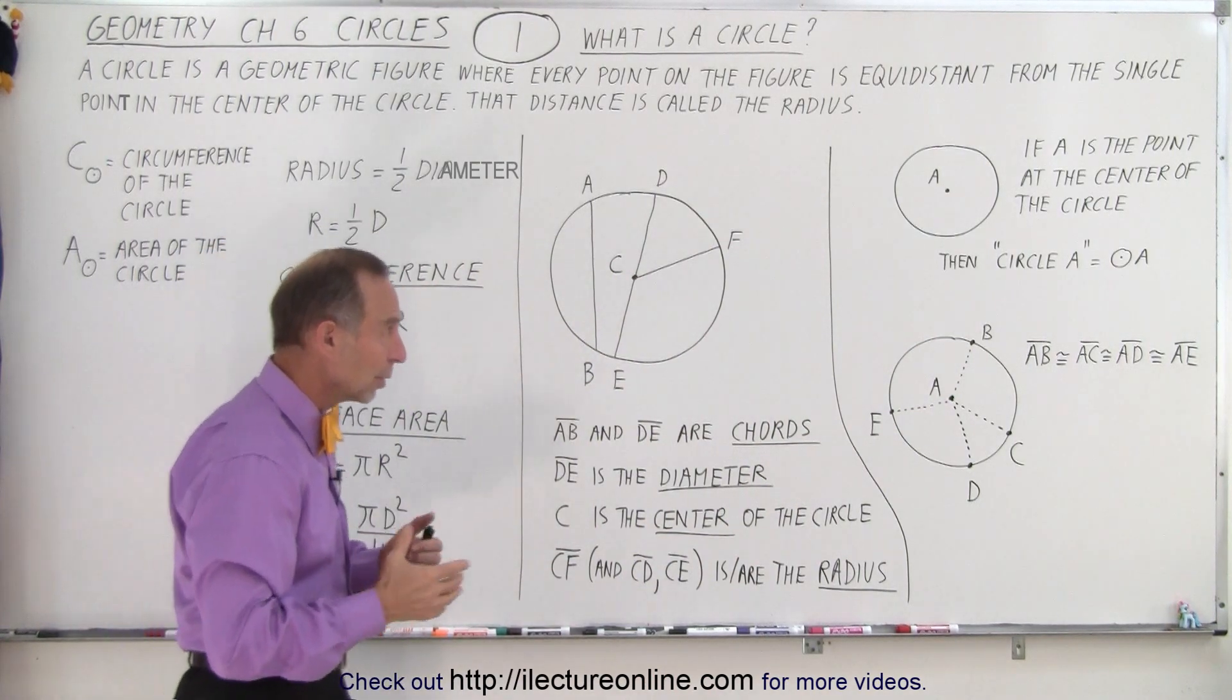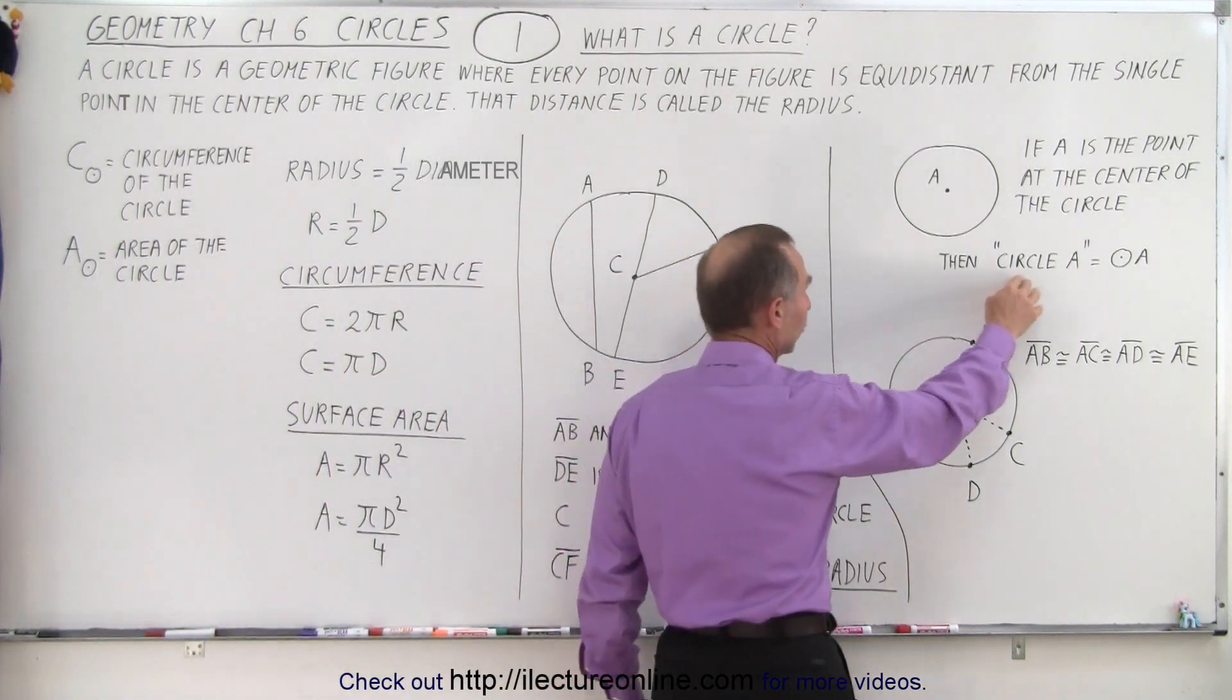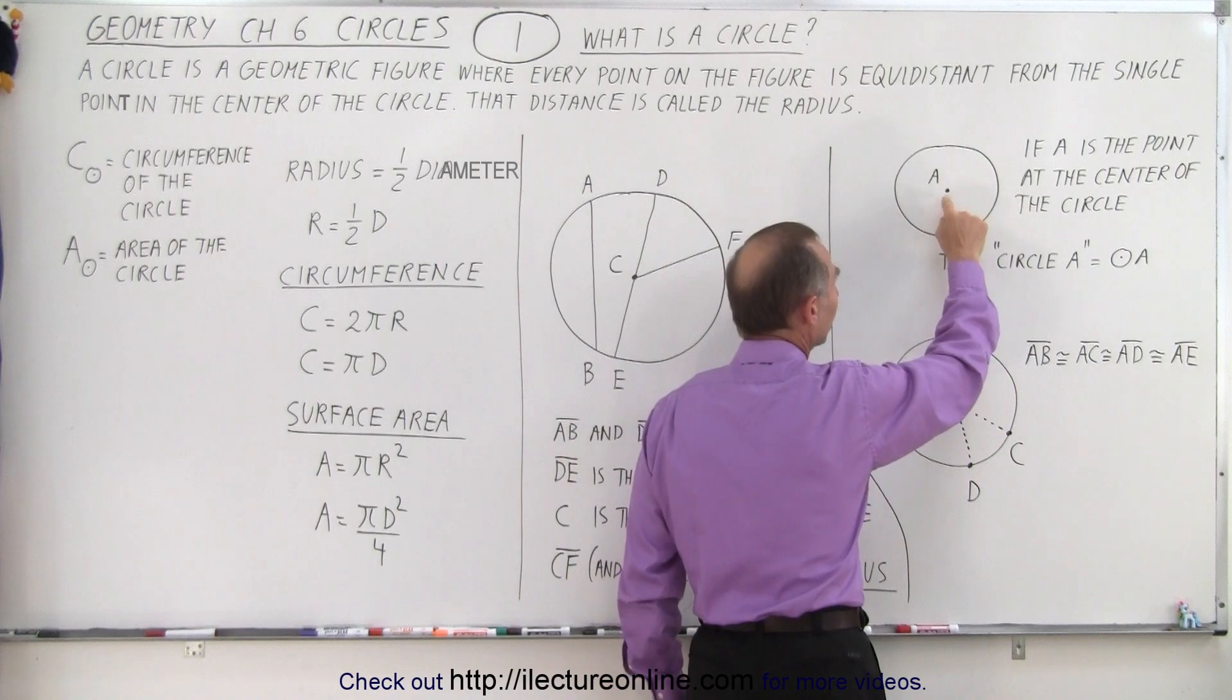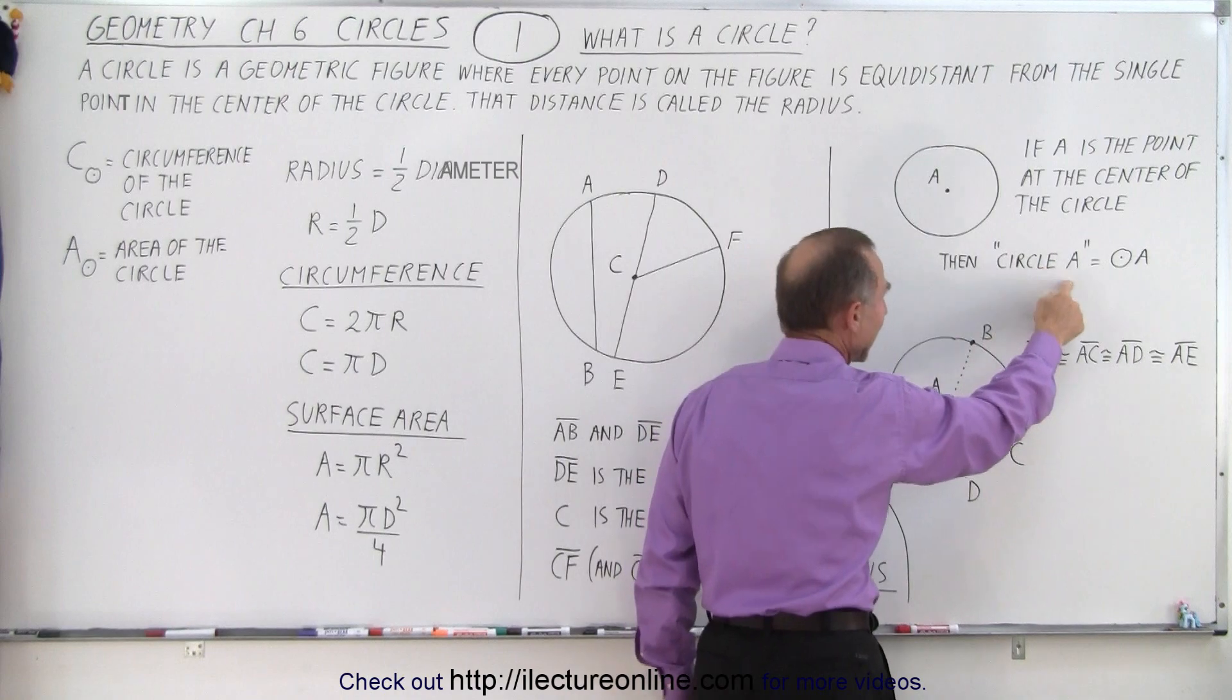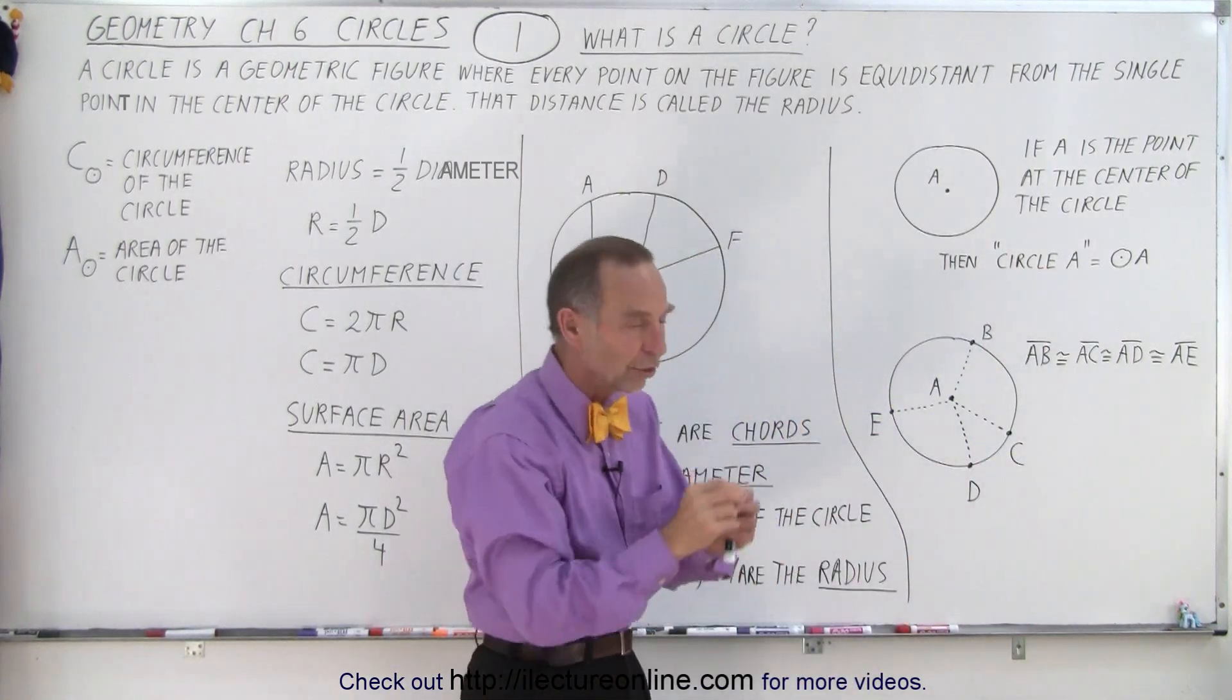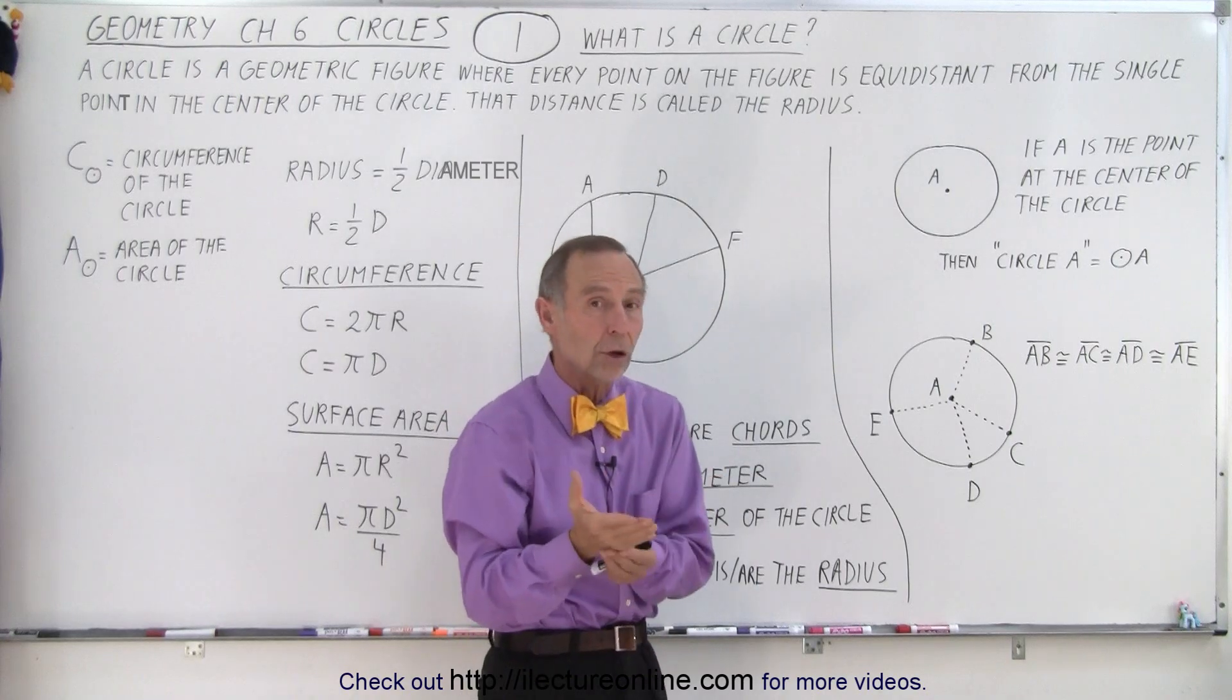Now, some of the things that we need to know is the following: How do we represent the circle? Well, we can talk about the circle with a given point. So if we label the point at the center of the circle, we can then say this is circle A. So that's referencing the central point of the circle,